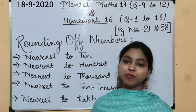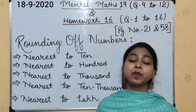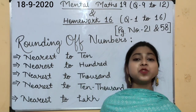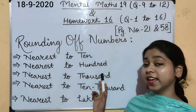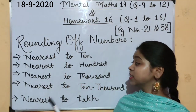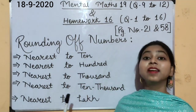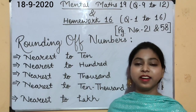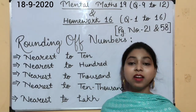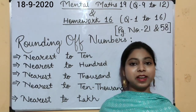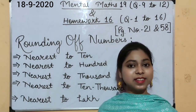Rounding of Numbers means to estimate numbers. We can estimate numbers to various places: nearest to 10, nearest to 100, nearest to 1000, nearest to 10,000, and nearest to the lakh place. Let's learn how to estimate numbers to various places throughout this video.